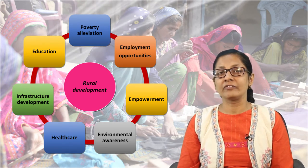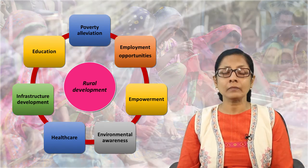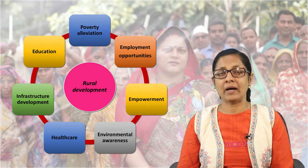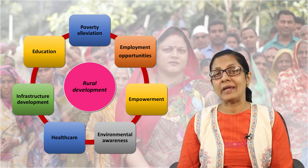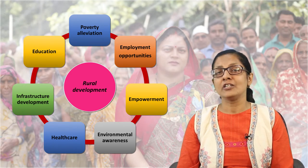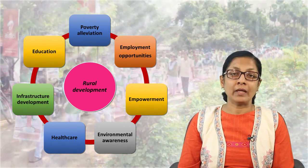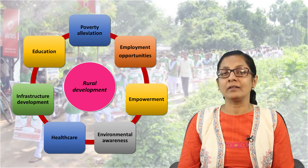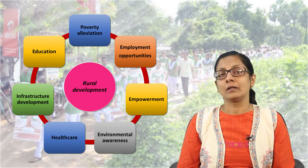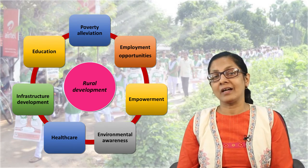Looking at the flowchart, each and every activity and area is interlinked. Another area is empowerment — empowerment of women, of the downtrodden, of tribals, and empowerment based on the caste system. There are many issues related to this, and self-help groups address empowerment as a major concern. There are also environmental awareness issues, including protecting and sustaining the environment and providing consciousness about ecosystem protection.